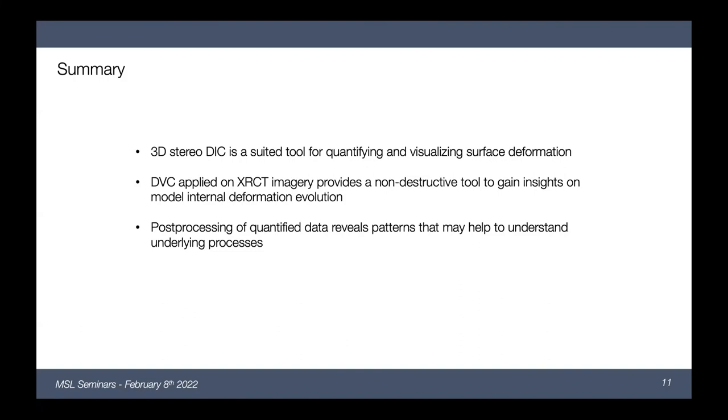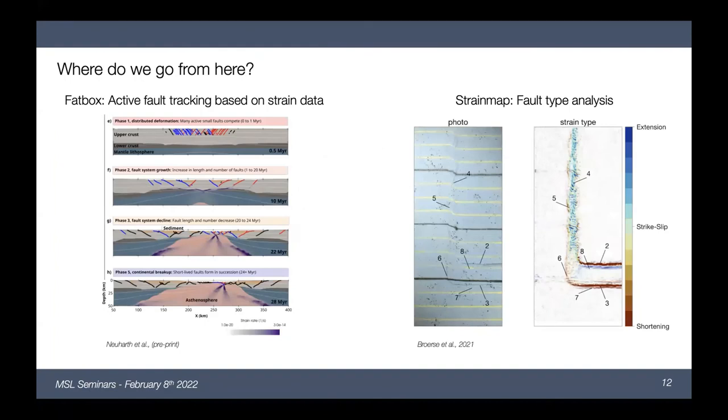So that's a bit the state where we are at the moment, and before I close, I would like to have a look a bit more into the future, and question where can we go from there. And there are some really nice toolboxes out there which are freely available, and two examples I would like to show you before I finish here. On the left side we have FATBOX, which is a toolbox which is able to track active faulting based on raster data, and you can see here that this has been applied on numerical models, but in my opinion there's no reason why we shouldn't be able to apply the same technique on data from analog models.